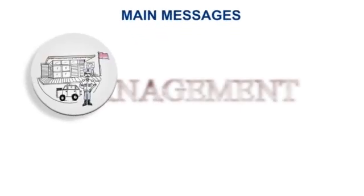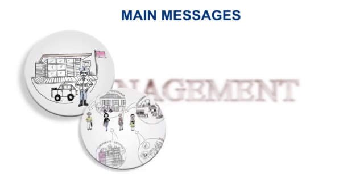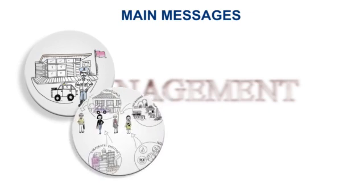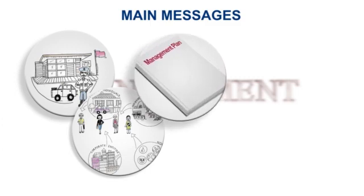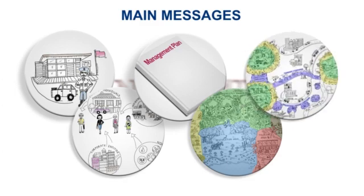Main messages: Protected areas law must create effective and accountable management authorities. It may enable the sharing of functions, powers and responsibilities between management authorities. It should prescribe a clear management planning regime, enable different management approaches and levels of regulation within one site through zoning, and promote buffers and connectivity.